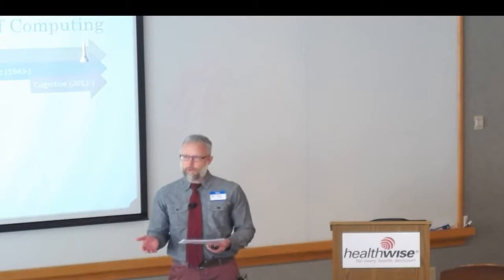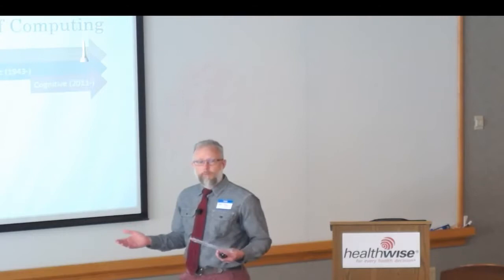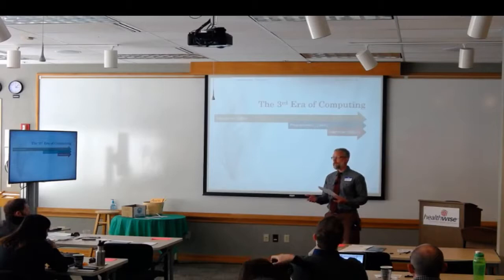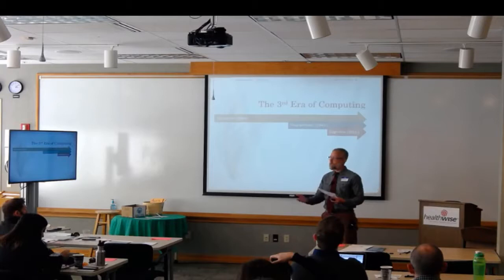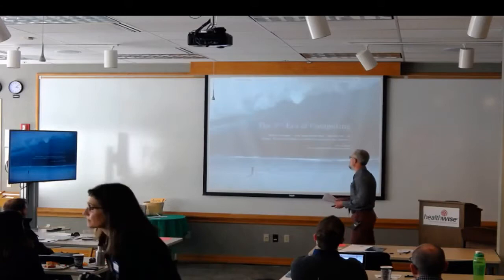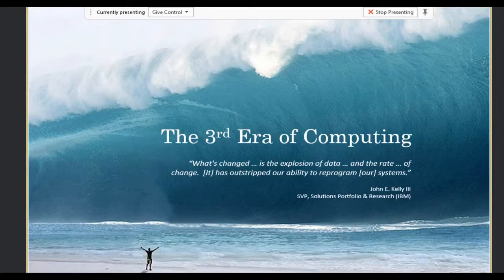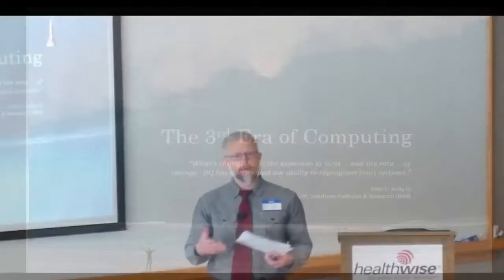ENIAC was one of the first electronic general purpose computers. It had 17,500 vacuum tubes, 5 million hand-soldered parts, and it weighed 30 tons. Every time they turned it on, the lights in Philadelphia would dim. The programmatic era is the era we've all grown up in. But there is a new kind of computer emerging around us — cognitive systems — based on technologies that have been around quite a while. One of the reasons they're emerging today is because of the explosion of data. John Kelly has said this explosion of data has outstripped the ability of IBM to reprogram their computers, forcing them to invent ways that computers can essentially program themselves.